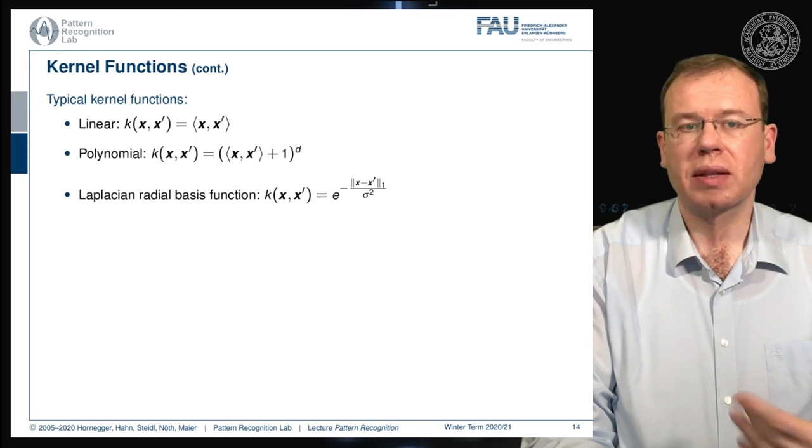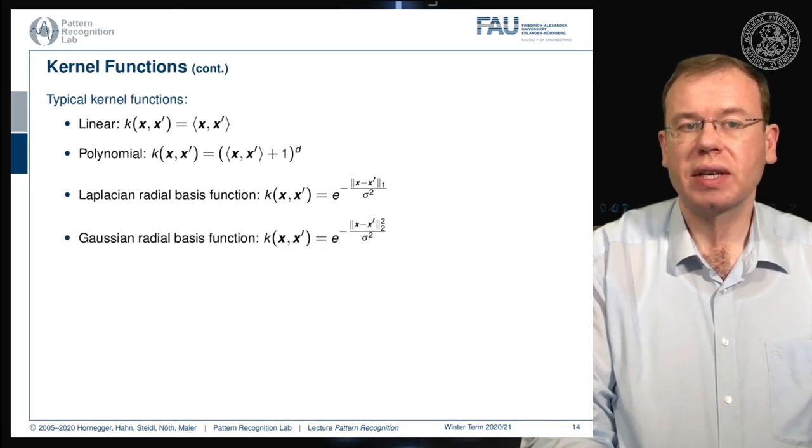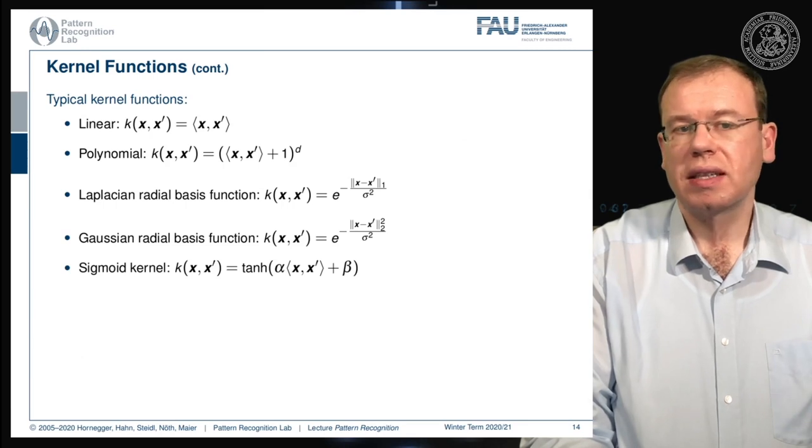We are essentially using e to the power of minus, and then not the two norm, but the one norm, and we divide by some standard deviation. Obviously, we can do something similar to Gaussians where we then have the two norm, and we can also use sigmoid kernels using the hyperbolic tangent.